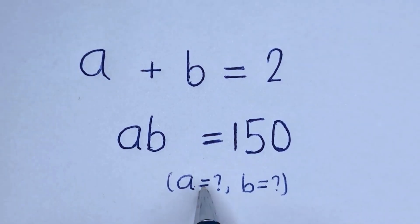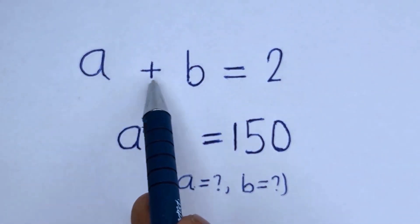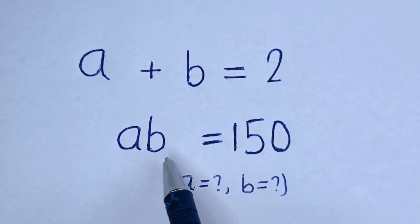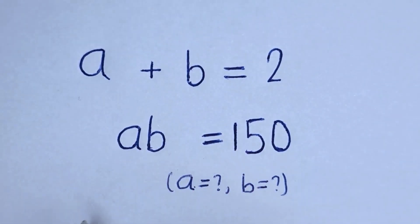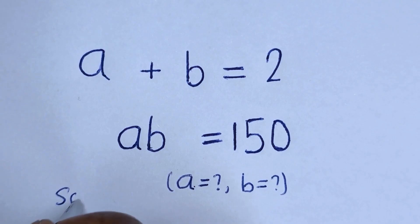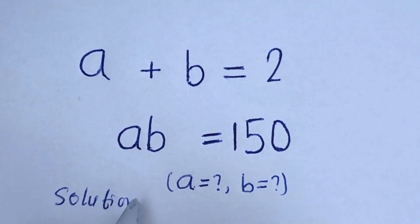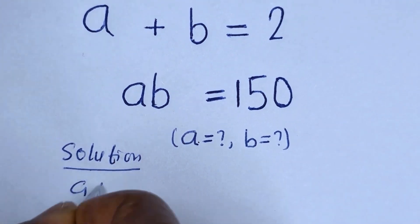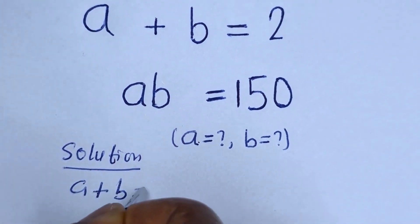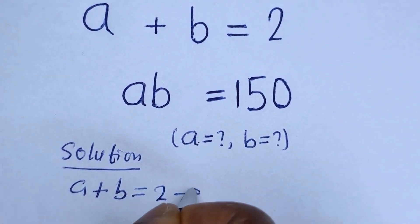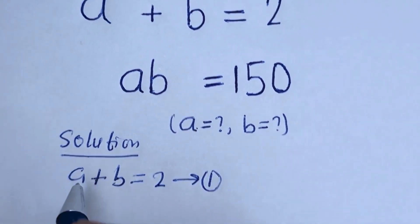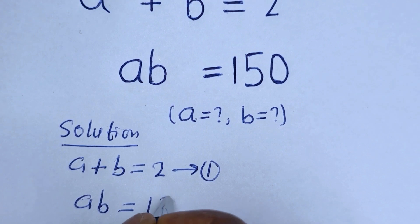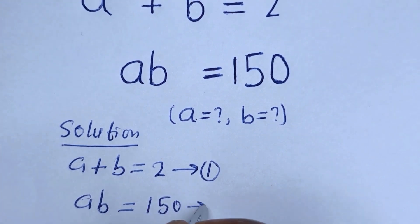Hello. How to solve for A and B in this equation: A plus B is equal to 2, and AB is equal to 150. Solution. We have A plus B is equal to 2 — let's call this equation 1. Then AB is equal to 150 — let's call this equation 2.